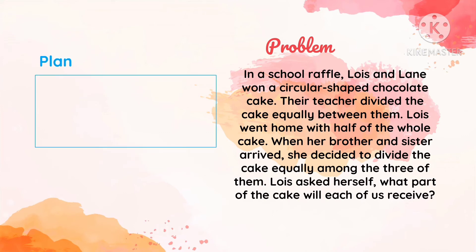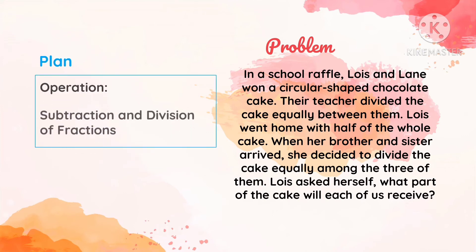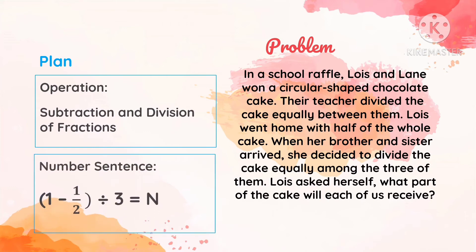We plan for the operation, and we're going to use division and subtraction of fractions. Our number sentence will be 1 minus one-half divided by 3 is equal to n. The one whole is subtracted by one-half because half is what Louise brought home, and then the remaining half is divided by 3 because there are three siblings sharing the half cake.